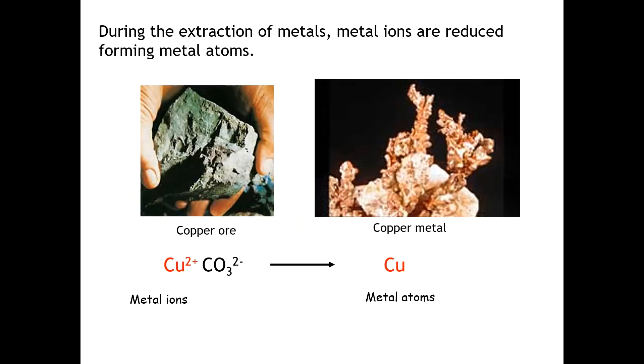When metals are extracted from ores, what happens is that metal ions are reduced, i.e. they gain electrons in a reduction reaction to form metal atoms. This is malachite, ore containing the ionic compound copper carbonate. It contains copper ions, and these gain electrons to form copper atoms, which give you this shiny brown color typical of copper metal.